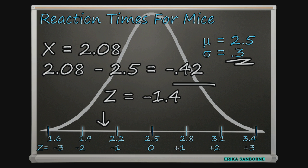Seymour's score is 1.4 standard deviations to the left of the mean. And remember, with reaction times, quicker is better, which is why I'm so proud of my little Seymour.